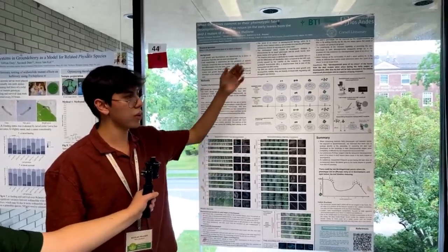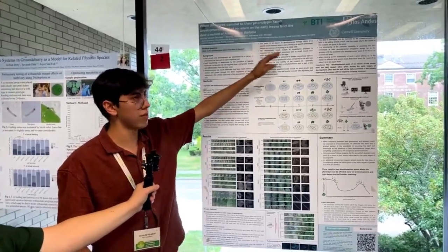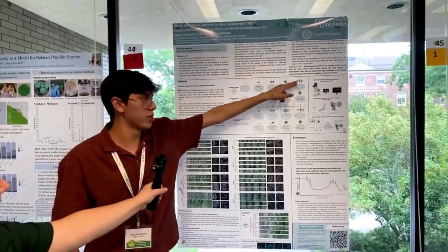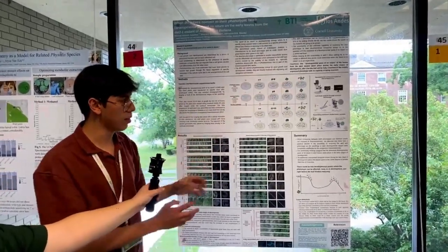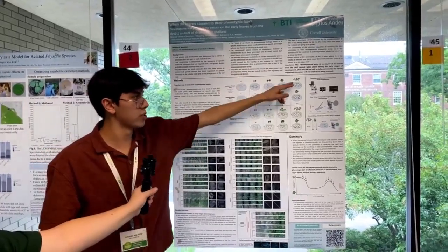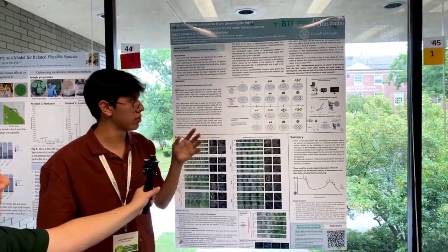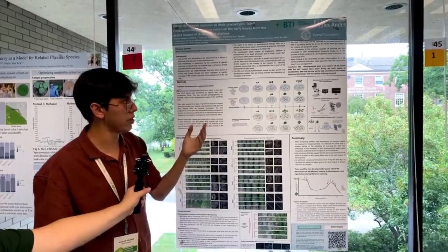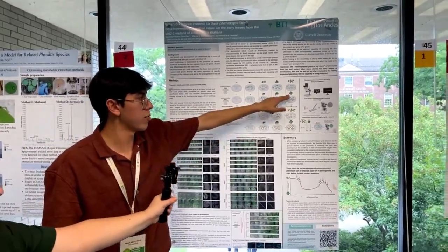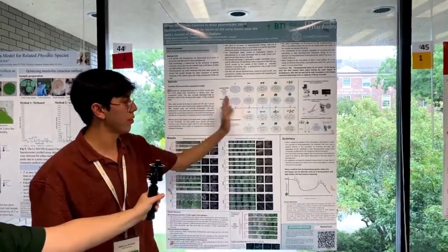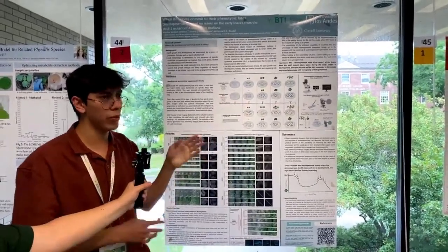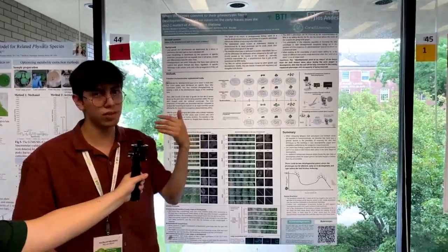In this project we wanted to see if the DT2 mutant — which you can see here — has smaller leaves compared to the Col-0 phenotype. The good thing about this mutant is that it can be reversed to a Col-0 phenotype by adding a molecule called brassinosteroid. By adding this molecule, the DT2 plants start to take more of a Col-0 shape, and by transferring them on different days after development, you can see the specific time point where plants are being affected by the presence of brassinosteroid.